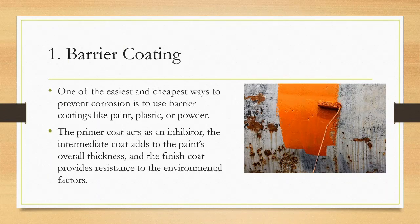Barrier coating: One of the easiest and cheapest ways to prevent corrosion is to use barrier coatings like paint, plastic, or powder. Paint acts as a coating to protect the metal surface from the electrochemical charge that comes from corrosive compounds. The primer coat acts as an inhibitor, the intermediate coat adds to the paint overall thickness, and the finish coat provides resistance to the environmental factors. Barrier coating aims to prohibit water, oxygen, and other chemicals from making contact with the substrate.